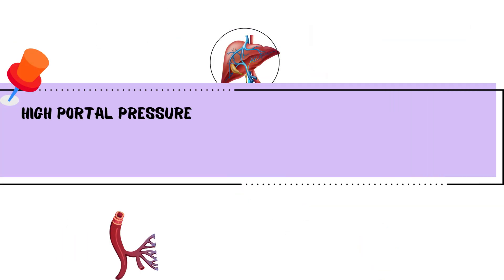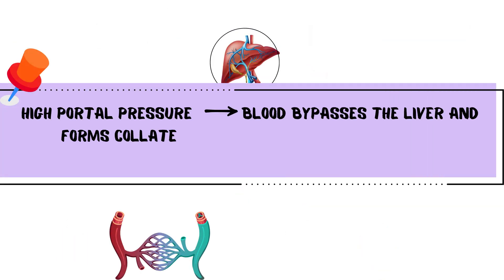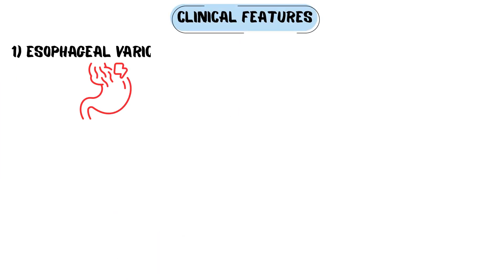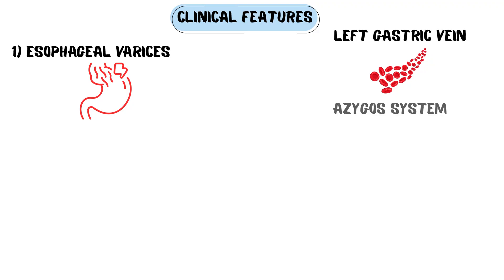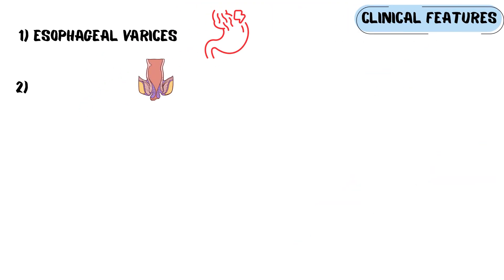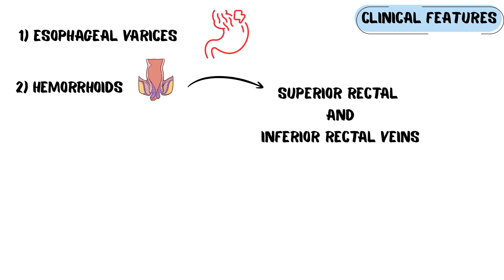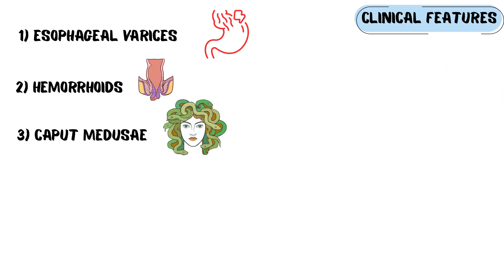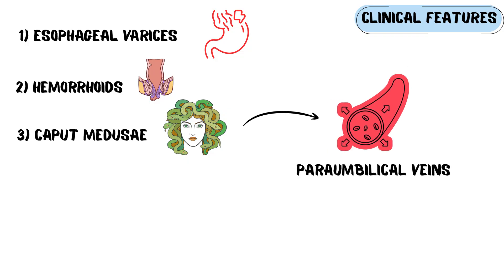Because of high portal pressure, blood bypasses the liver and forms collateral channels — a process called portosystemic shunting. Esophageal varices form when blood flows from the left gastric vein into the azygos system and may rupture, causing massive hematemesis. Hemorrhoids occur through communication between the superior rectal and inferior rectal veins. Caput medusae appear at the umbilicus due to dilation of paraumbilical veins.